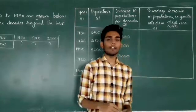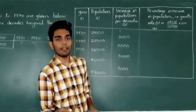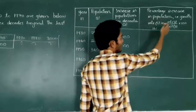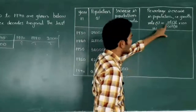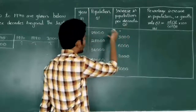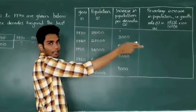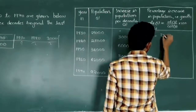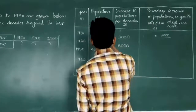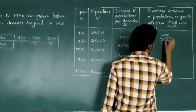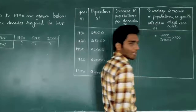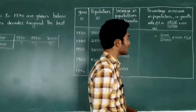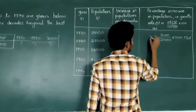After getting those values, we have to find the percentage growth rate. For that purpose we have to find the value of r. The percentage increase in population, that is the growth rate, equals column 3 divided by column 2, into 100. So 3,000 divided by 25,000 into 100 gives 12%. Growth rate is always taken in terms of percentage. So r1 equals 12%. Now let us find r2: column 3 value 6,000 divided by column 2 value 28,000 into 100 gives 21.4%.